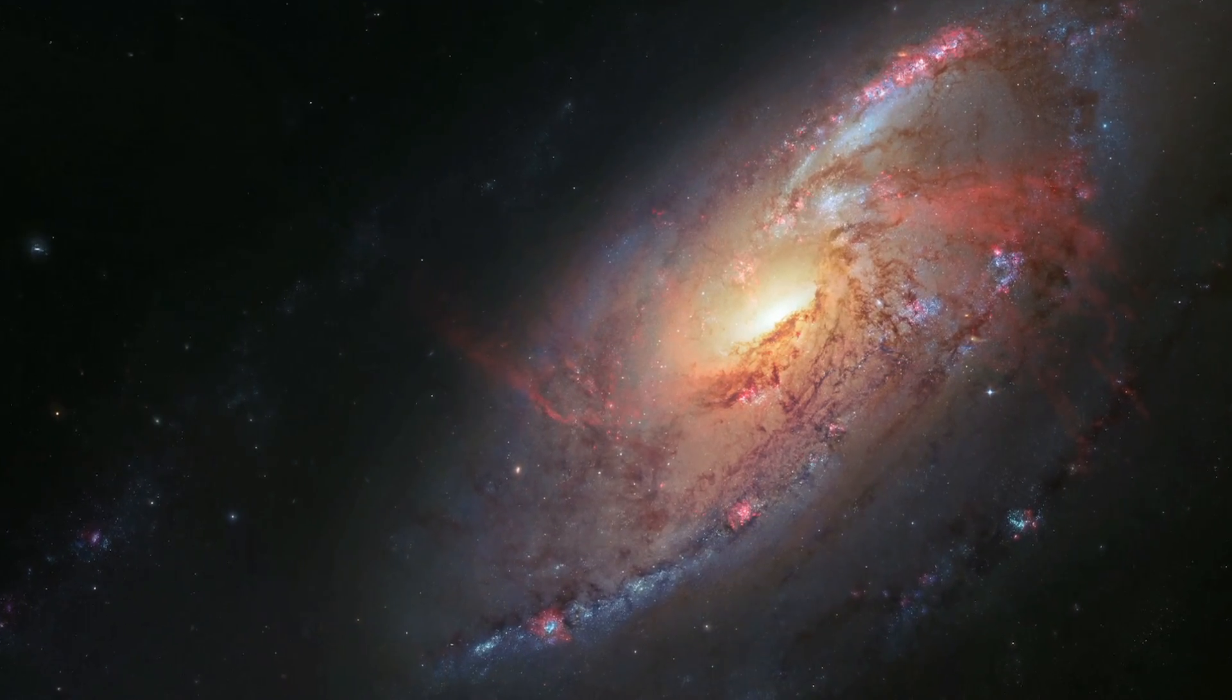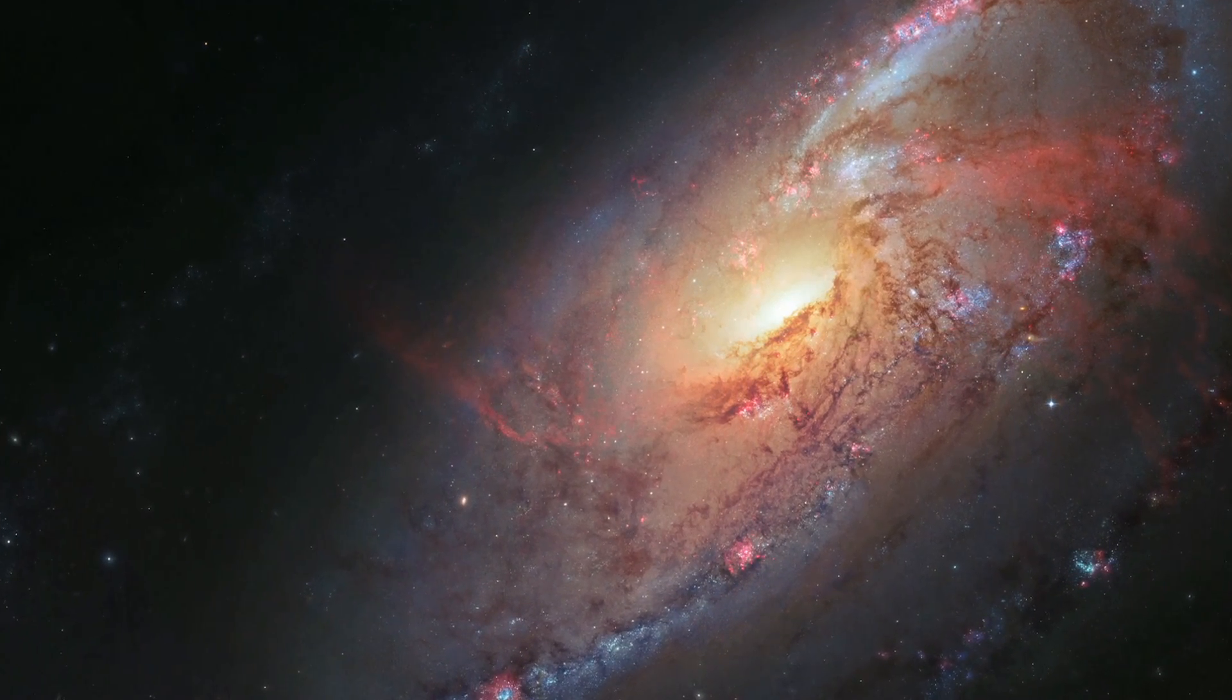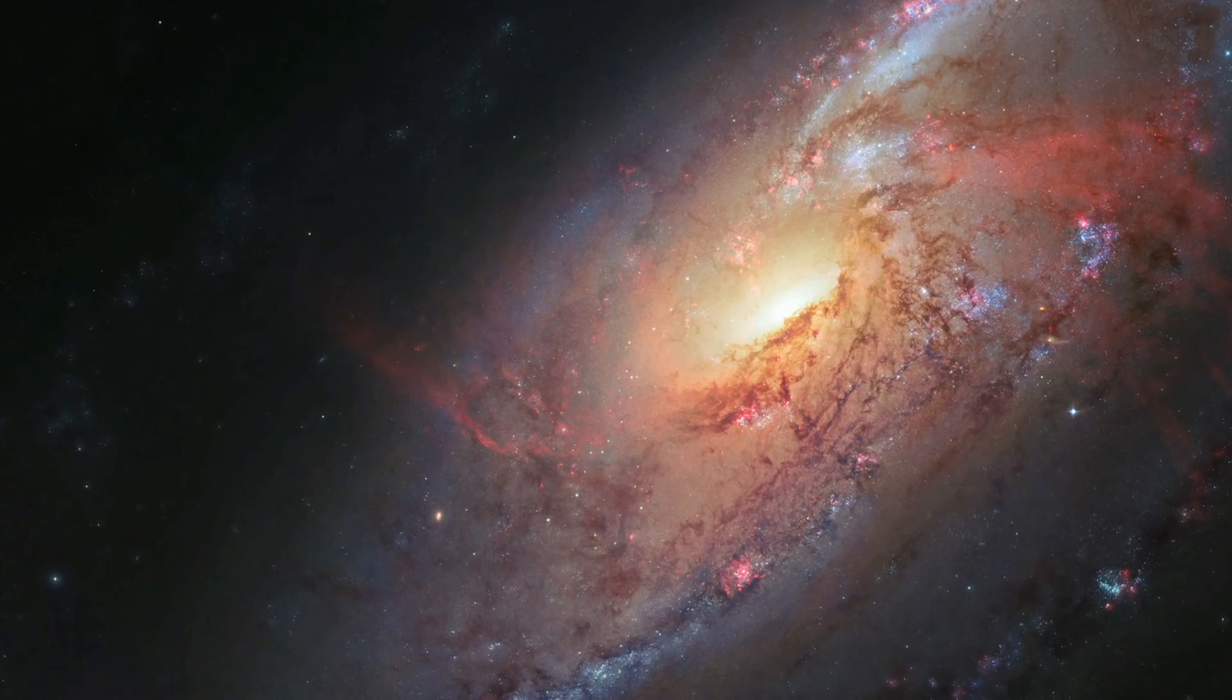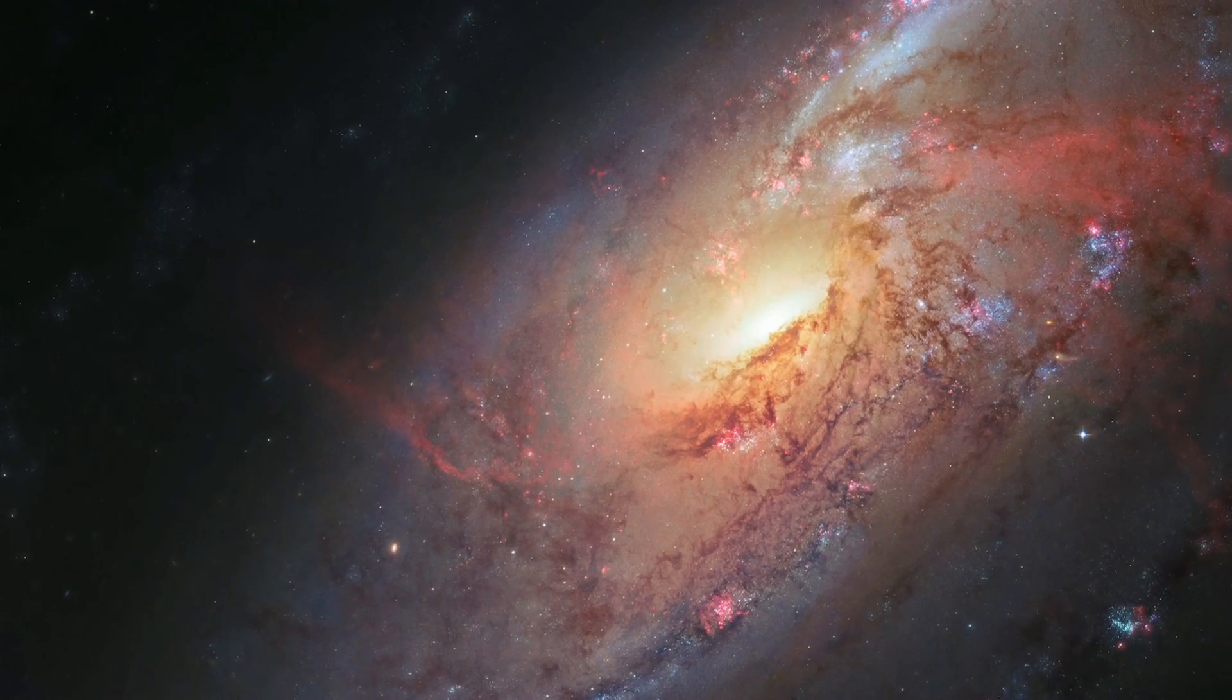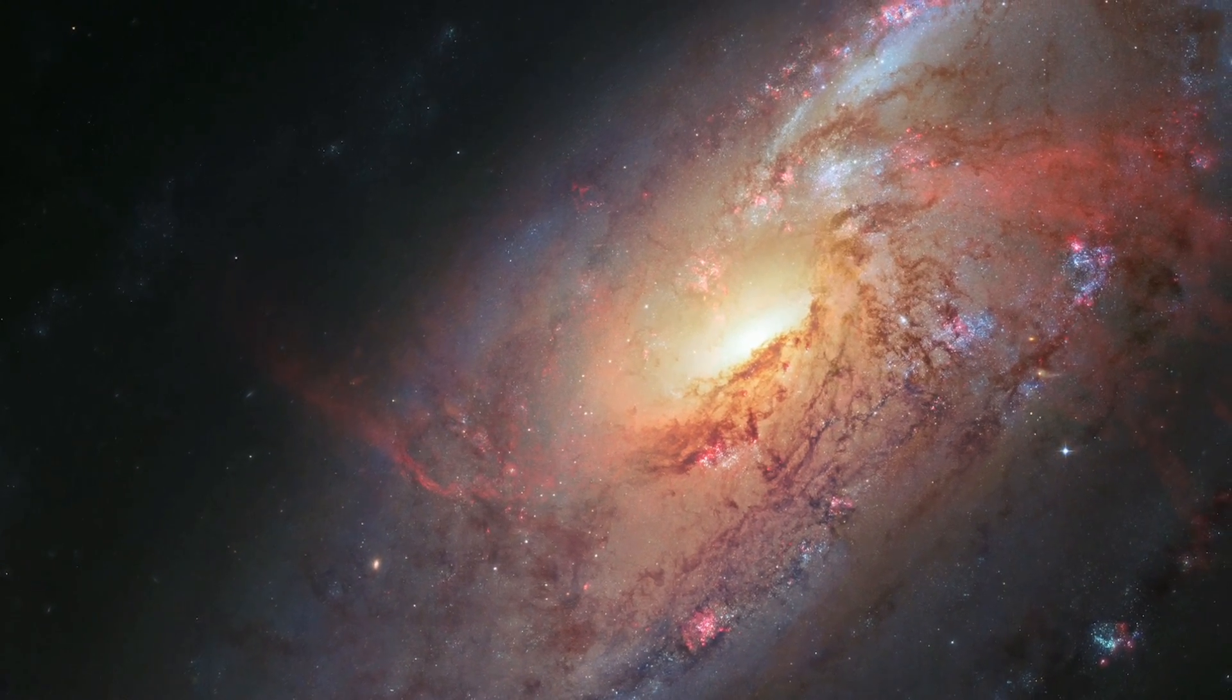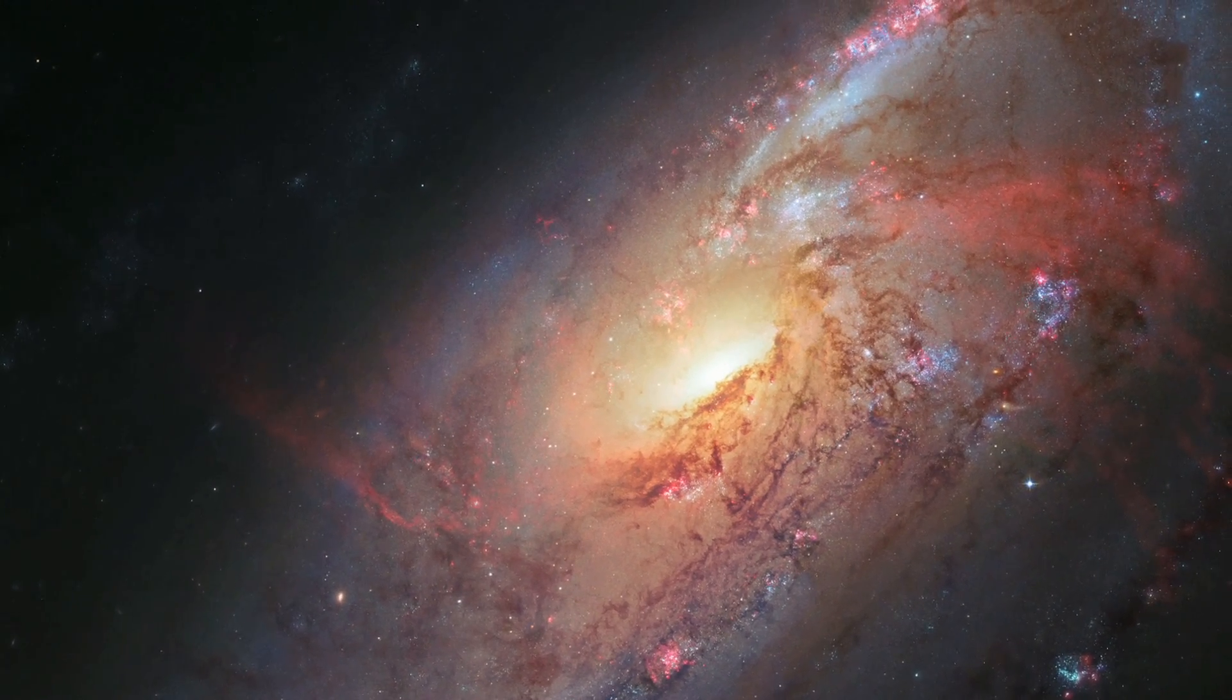Located a little over 20 million light-years away, practically a neighbor by cosmic standards, Messier 106 is one of the brightest and nearest spiral galaxies to our Milky Way. Although it may not look particularly unique, some of its features have baffled astronomers for years.